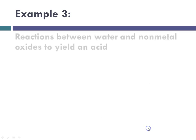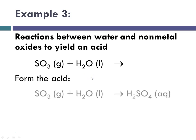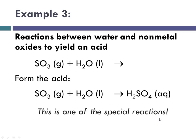So now example 3 is reactions between water and nonmetal oxides to yield an acid. So here I have sulfur trioxide plus water. I'm going to form the acid, and in this case I'm going to form sulfuric acid. So SO3 plus H2O will yield H2SO4. And this one is one of our special reactions, and you'll notice it is already balanced. 1 sulfur on each side, 2 hydrogens, and 4 oxygens, 3 plus 1.